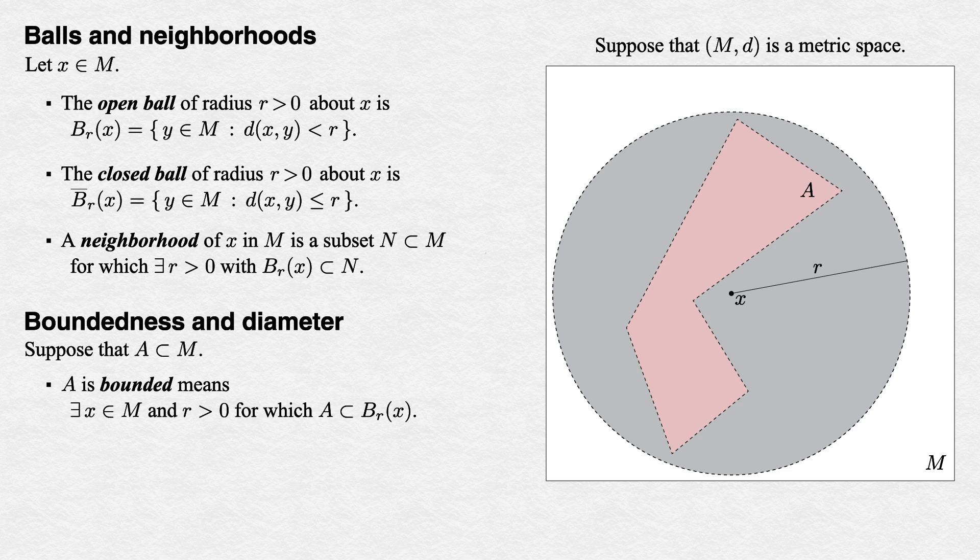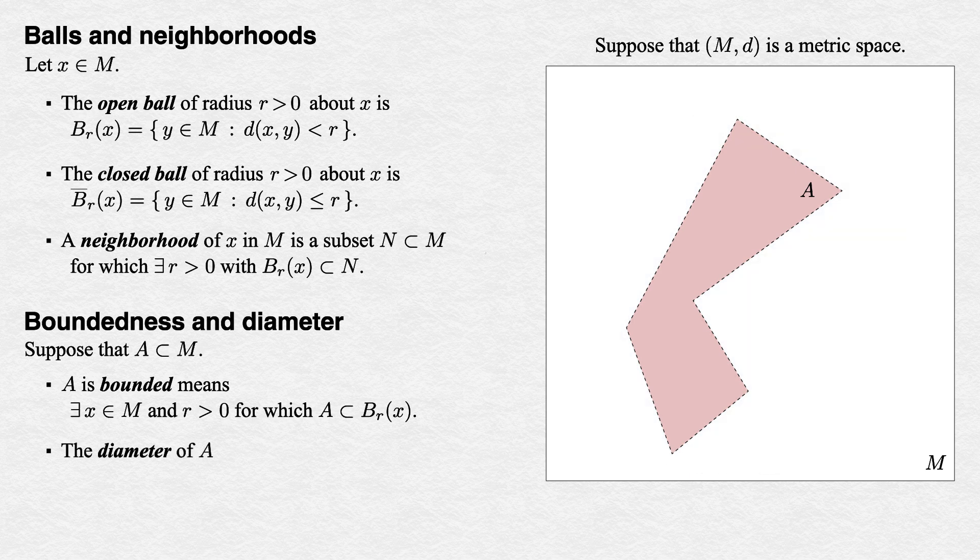If you recall seeing the word bounded before for sequences, this is related. A sequence is bounded just when its set of terms is bounded, and this definition works for sequences in any metric space. Our second concept is that of diameter, which represents how far apart points in A can get. Specifically, we define the diameter of A by looking at the set of all possible distances between points in A and taking its supremum. To be clear, there need not be a pair of points in A that realizes this distance. But recalling what we know about the supremum, we can at least approach that distance via pairs of points in A.